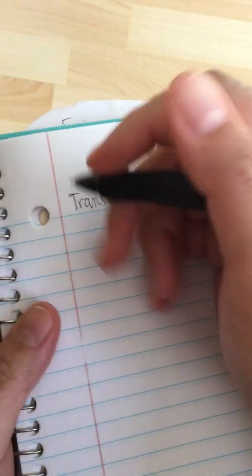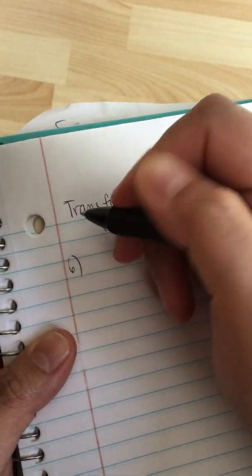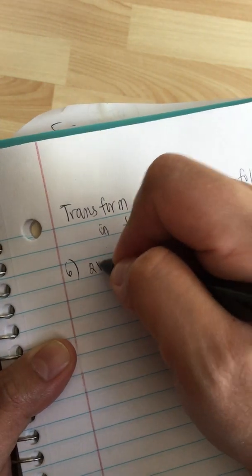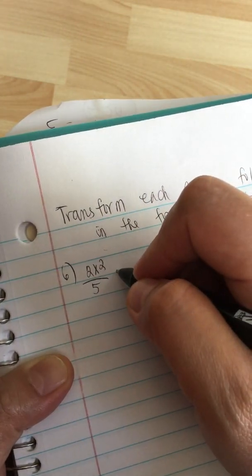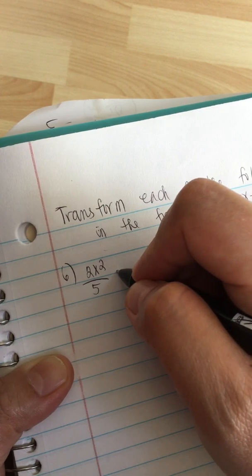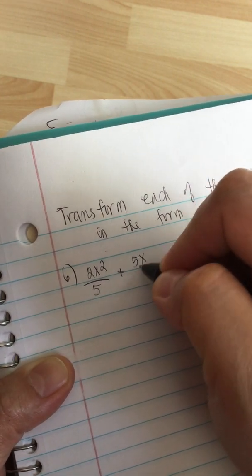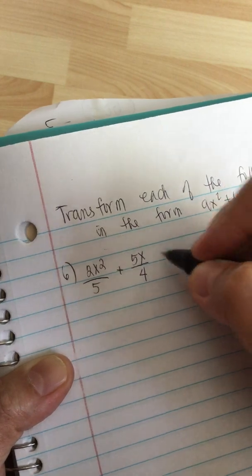Number 6: 2x squared over 5 plus 5x over 4 equals 10.